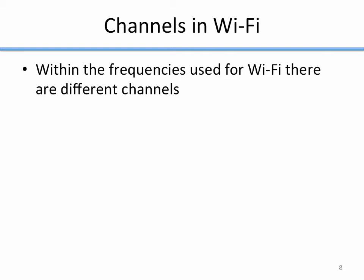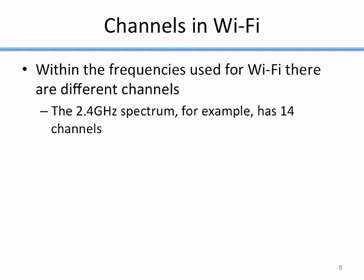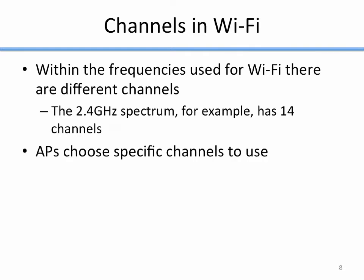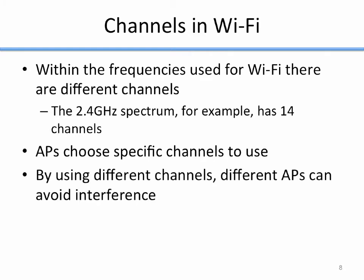Within the 2.4 GHz and 5 GHz frequency ranges, there are different channels. In the 2.4 GHz range there are 14 different channels, and your access point is configured to use specific ones. By using different channels, multiple access points in the same area can avoid interference — since radio transmissions on exactly the same frequency interfere with each other, channels are allocated on slightly different frequencies to allow multiple access points to operate simultaneously.